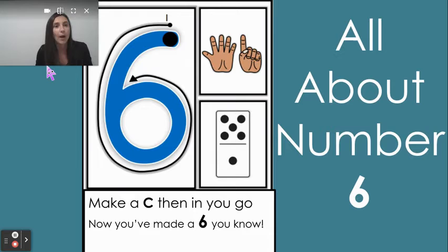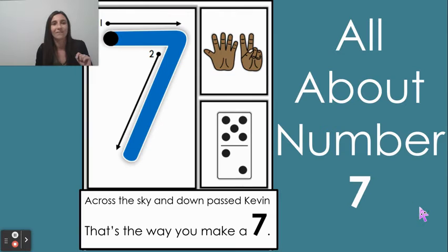So before we jump on to number 8, we are going to review our numbers that we have been learning about the past couple of days. All about number 6. So tell me this poem and let's sky write this poem together for this number. Ready? Make a C, then in you go. Now you've made a 6, you know. All about number 7. Ready? Let's sky write. Across the sky and down past Kevin. That's the way you make a 7.